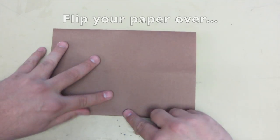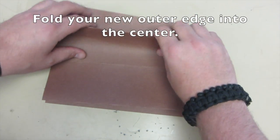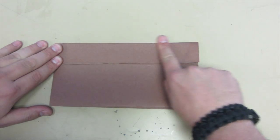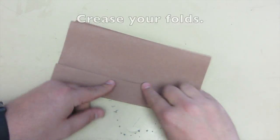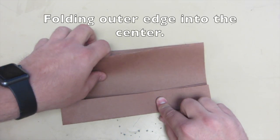Flip your paper over, and now fold your new outer edge into the center fold, as seen here. Crease your folds, and repeat on the other side, folding the outer edge into the center.